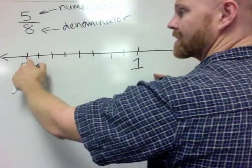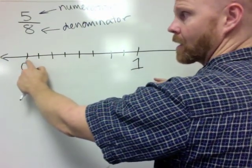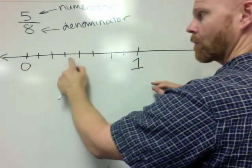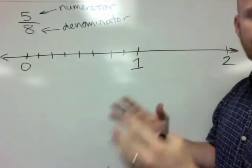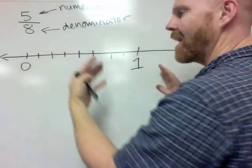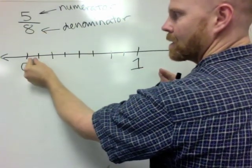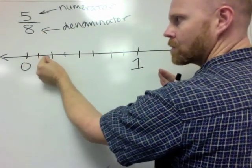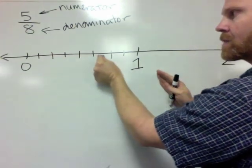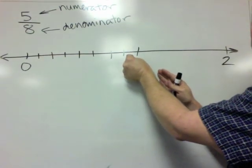Now a lot of students count this as 9 because they count the lines. They count 1, 2, 3, 4, 5, 6, 7, 8, 9. That's dead wrong because you're counting the lines. This denominator, 8, means you've cut it into 8 segments. So 1, 2, 3, 4, 5, 6, 7, 8. And that's what that means.